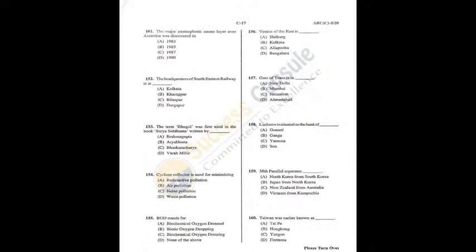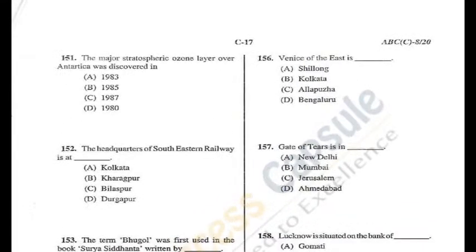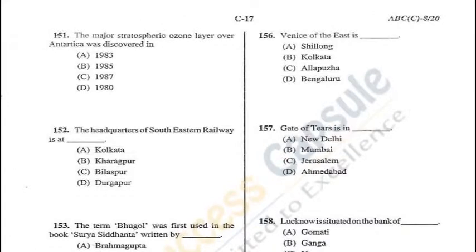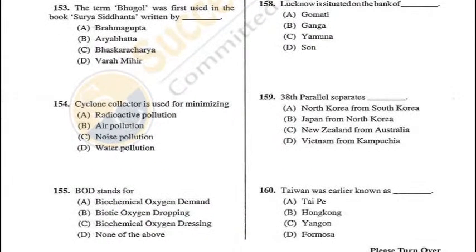Question 151: The major stratospheric ozone hole over Antarctica was discovered in 1985 — B is the correct answer. Question 152: The headquarters of South Eastern Railway is at Garden Reach in Kolkata — A is the correct answer. Q151 = B, Q152 = A. Question 153: The term 'Dughol' was first used in the book Surya Siddhanta, written by Aryabhatta — B is the correct answer.